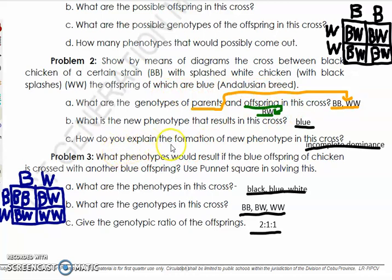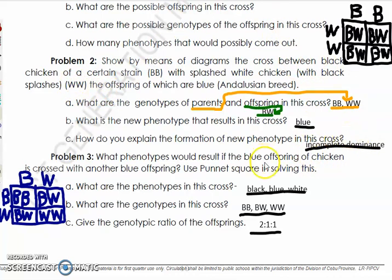How do you explain the formation of the new phenotype? This is an application of incomplete dominance — not only applicable to four o'clock flowers but also to chicken feathers. Black chicken combined with white chicken results in blue, meaning black is incompletely dominant over white and white is incompletely dominant over black.